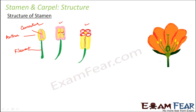The connective is a tissue-like structure which connects and supports the two lobes of the anther — that is why it is called connective, because it connects the lobes. It is attached at the back side of the anther.